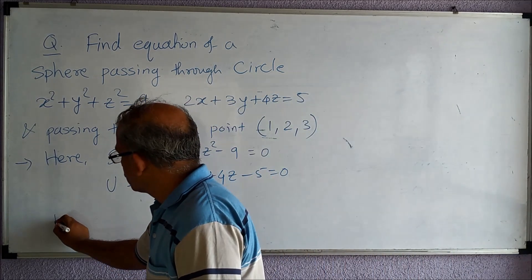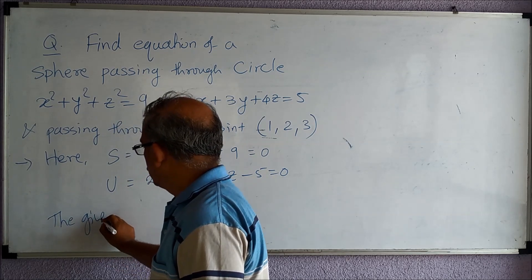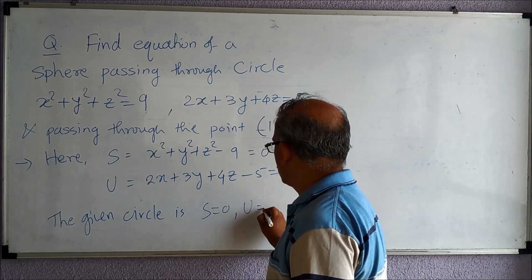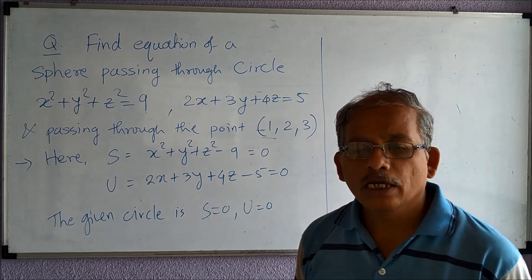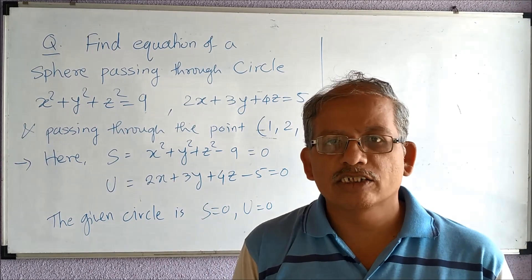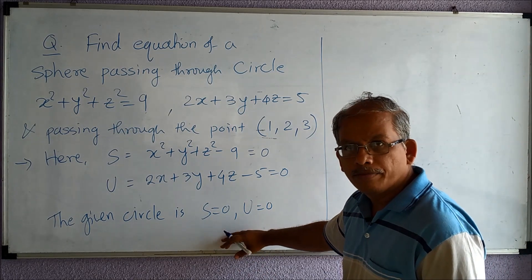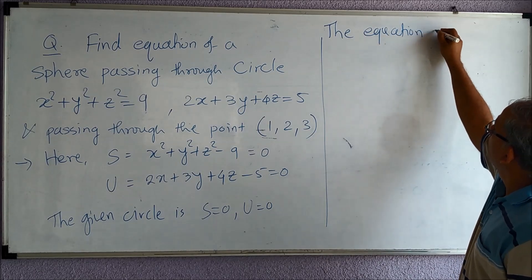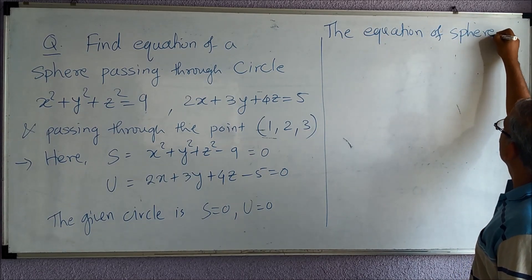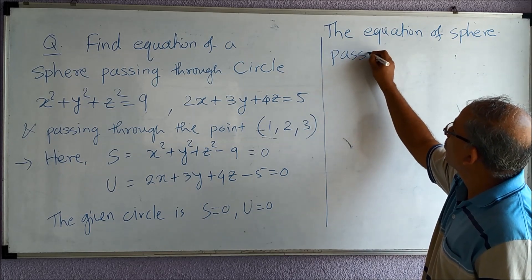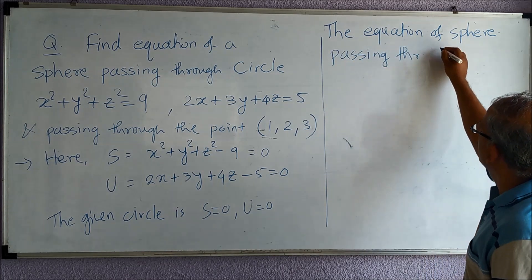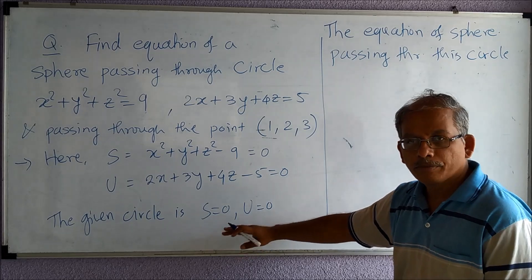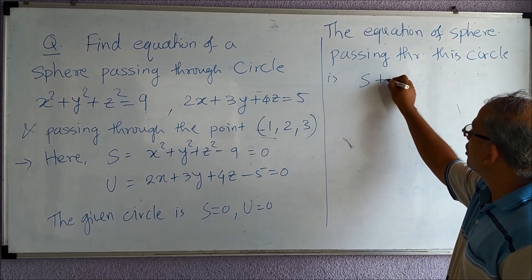The given circle is S equal to zero, U equal to zero. The equation of the sphere passing through this circle is given by S plus λU equal to zero.